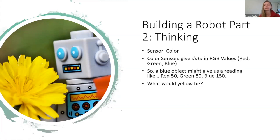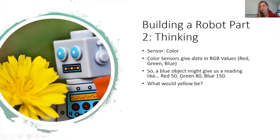For our example of picking a flower, we'll start with a color sensor. Color sensors give data in what's called RGB values — red, green, blue. For any color sensor reading you get three numbers, all between 0 and 255. A blue object might give red 50, green 80, blue 150 — blue is the biggest by far, so blue dominates. For our yellow flower, we need to know what a color sensor reading would look like for yellow.